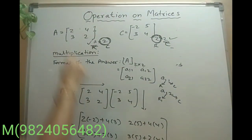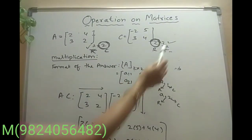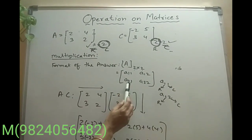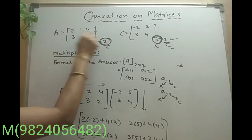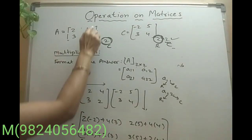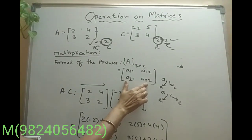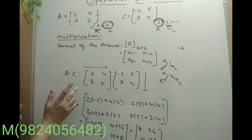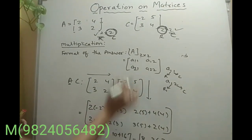Let us start this example — A is given, C is given, we have to find AC. The format of the answer is 2 by 2. So we write down the standard format: A11, A12, A21, A22. A11 means first row, first column; A12 means first row, second column; A21 means second row, first column; A22 means second row, second column. Also note that multiplication is not commutative — AC is not equal to CA. So the order is important.